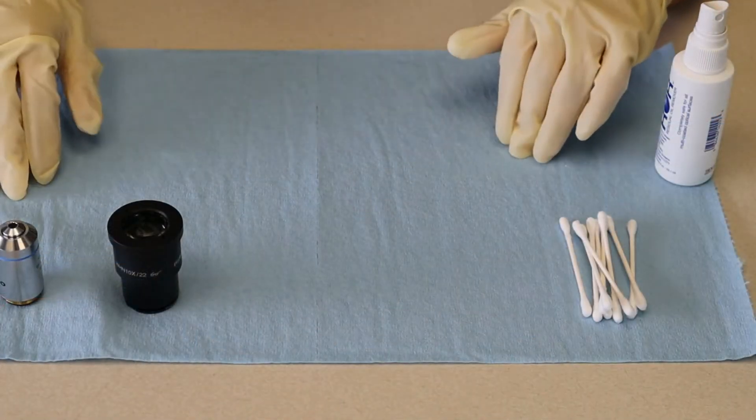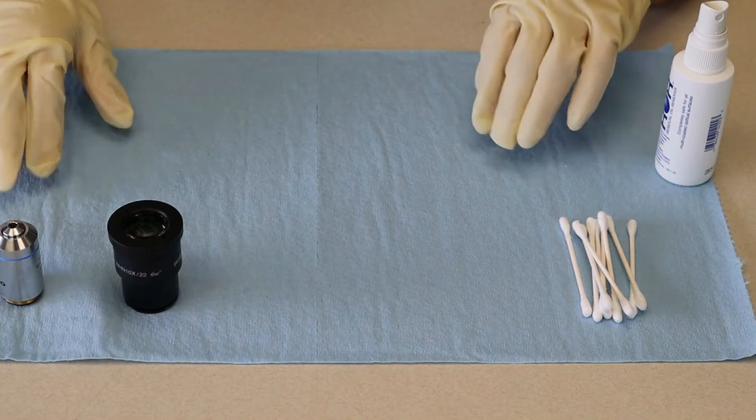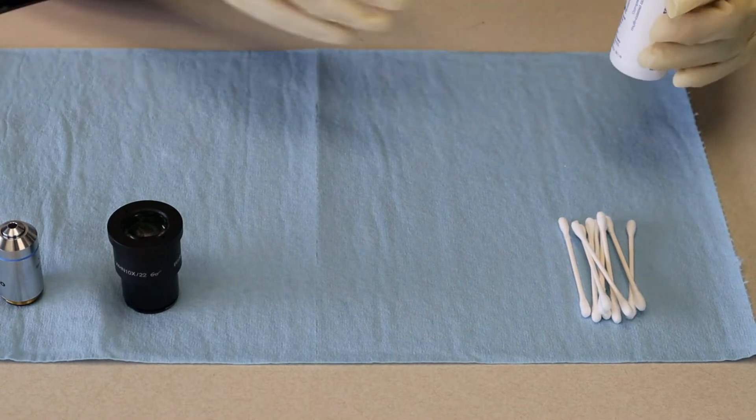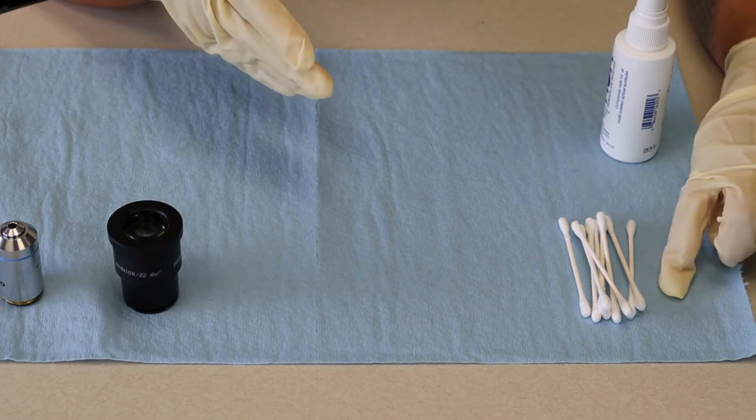Okay, so we have here a paper towel that's just going to help keep the surface clean, and then we have our ROR lens cleaning solution that we're going to use and then we have a few cotton swabs.